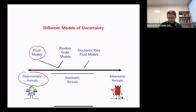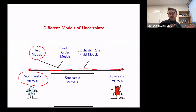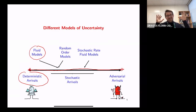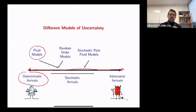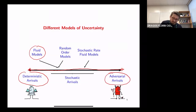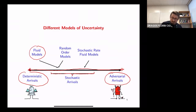Beyond these, there are three new boxes. One is the other extreme from deterministic arrivals: adversarial arrivals, where uncertainty can't even be governed by a probabilistic rule — nature is an adversary that picks whatever pattern of arrivals is worst for you. Within probabilistic models, there are two others I want to discuss: random order models and stochastic rate fluid models. I'll talk about random order models first, then adversarial arrivals, and hopefully stochastic rate models as well.